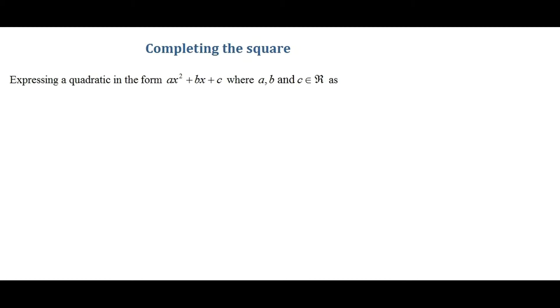Hi there. In this video I'm going to discuss completing the square. With completing the square, we're expressing a quadratic in the form ax squared plus bx plus c, where a, b and c are real numbers or constants, and we're taking this quadratic and writing it as a open bracket x plus h squared plus k.